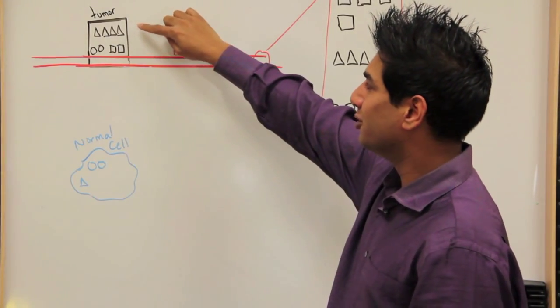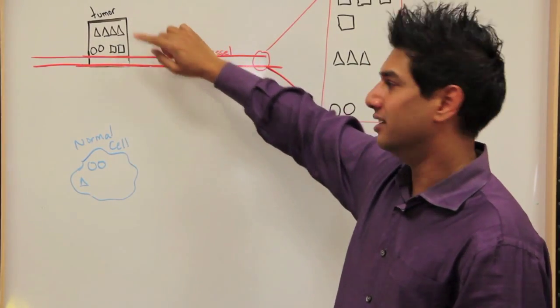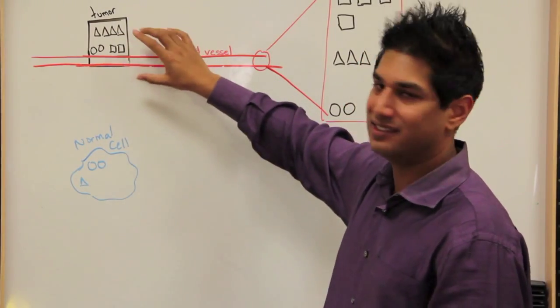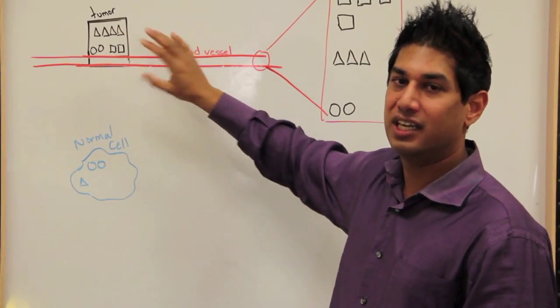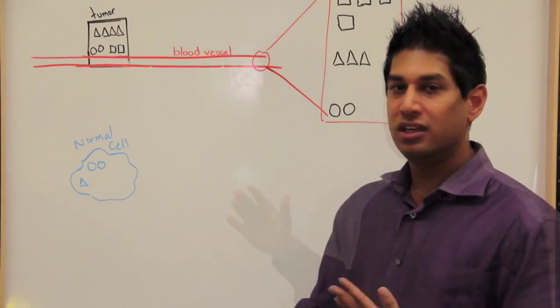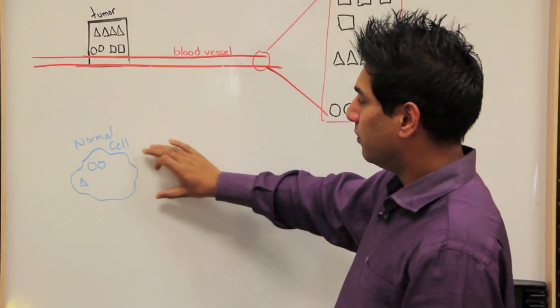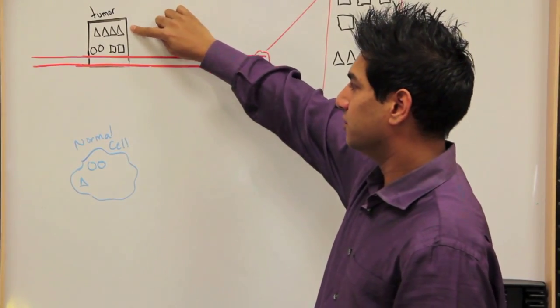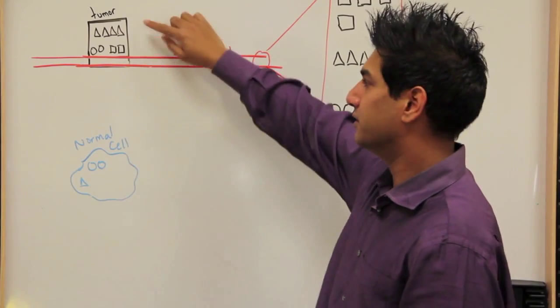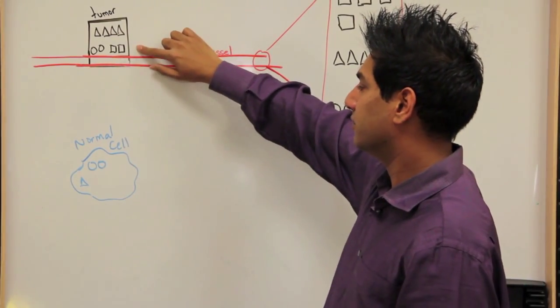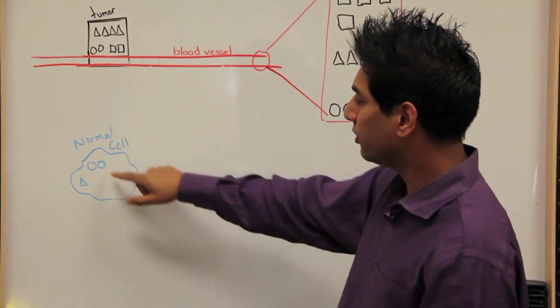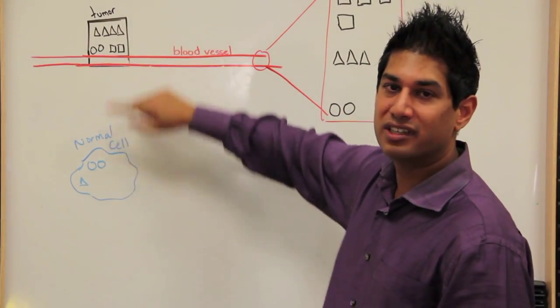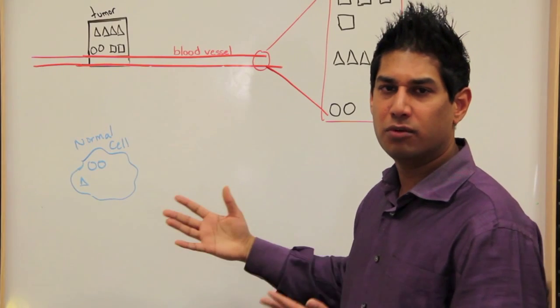the tumor cell has lots of these triangles and it has these special square proteins that are specific to being a cancer cell. So that's the first question. What's the difference? In this case, we can say the difference between a normal cell and a tumor cell are the levels of these particular proteins, the levels of the triangle protein and the level of the square protein. There are also these circle proteins which happen to be there, but they're the same in both the normal and the cancer cells. So they're not very informative.